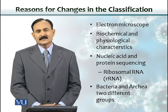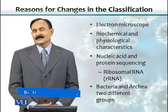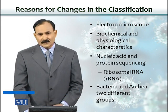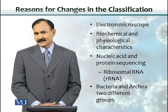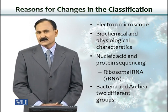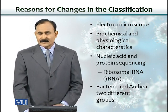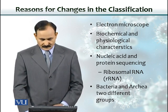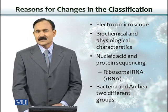Later, when sophisticated tools from the field of molecular biology became available and scientists started studying DNA and RNA sequences, they came to know that the previous five-kingdom classification did not answer all the questions. Knowledge from electron microscopes, biochemical and physical characteristics of microbes, and nucleic acid and protein sequencing made the previous classification kind of obsolete.